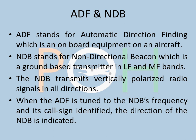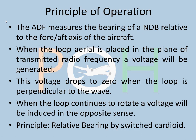We shall not be discussing RBI and RMI in detail in this video, but that's the instrument used to show the bearing of the NDB. Principle of operation: the ADF measures the bearing of the NDB relative to the fore and aft axis — that's the longitudinal axis — of the aircraft. When the loop aerial is placed in the plane of the transmitter radio frequency, a voltage will be generated. This voltage drops to zero when the loop is perpendicular to the wave, and when the loop continues to rotate, it will induce in the opposite sense. The principle is relative bearing by switched cardioid.